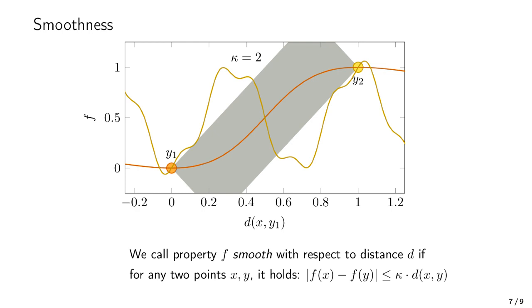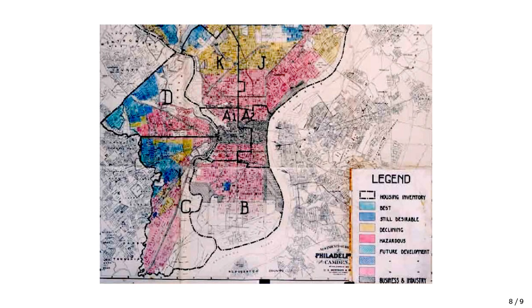In practice, it can be very hard to check whether a property f is actually smooth with respect to our chosen distance d. But it can be very helpful to think critically about smoothness and whether the distance you're using actually makes sense for your estimation. Otherwise, you may make estimates which may be wrong, harmful, or even discriminatory, like predicting creditworthiness from geographical distance. I recommend reading up on the term redlining to learn more about this topic.